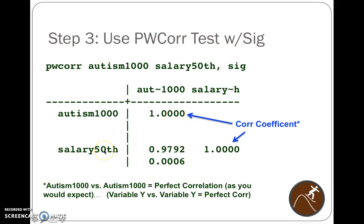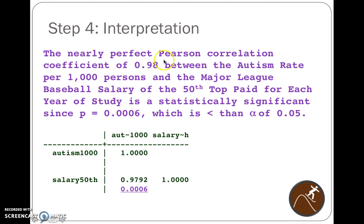You can see these correlation coefficients: when you're comparing the same variable — salary 50th versus salary 50th, or autism versus autism — that's going to be a perfect correlation, which is what that footnote is about. It doesn't provide p-values for those because there's no need to. But the cross-correlation is what we're interested in. For interpretation: we have a nearly perfect Pearson correlation coefficient of .98 between the autism rate per 1,000 people and the MLB salary of the 50th top-paid person for each year. That is statistically significant since p is .0006, which is less than our alpha value of .05.